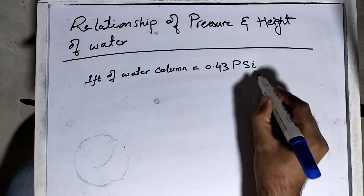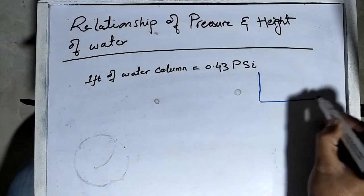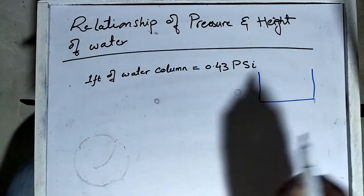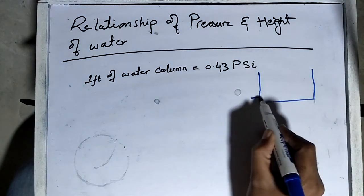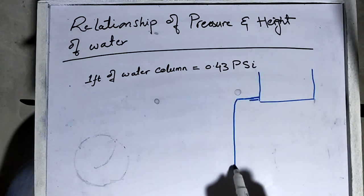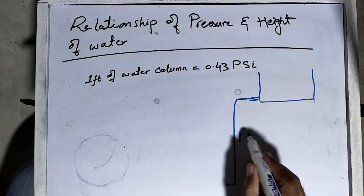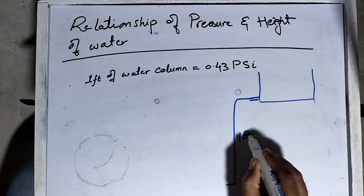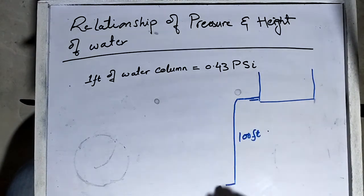So let's suppose I have a water tank and I take a discharge line to my ground level. This tank is at the height of 100 feet, and at the ground level I have a tap. So I need to know how much pressure I will find in my tap.